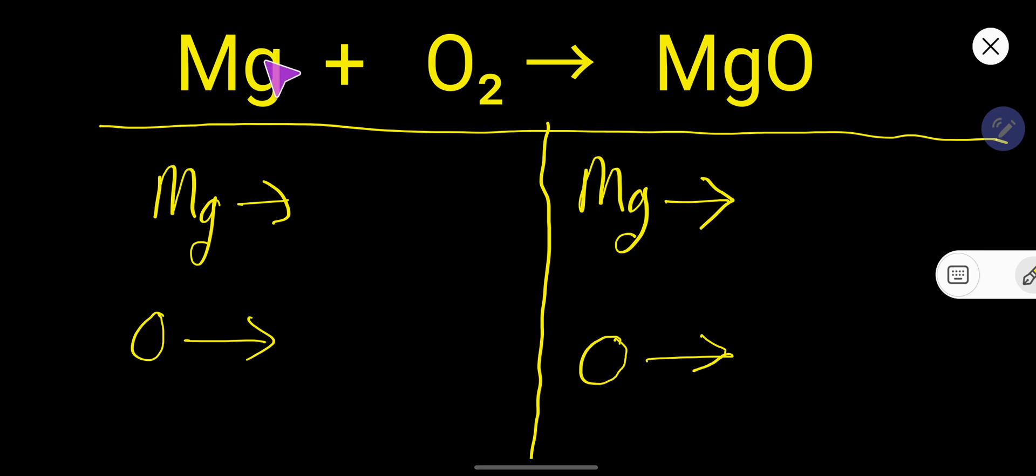On the left-hand side, the number of magnesium atoms is 1, the number of oxygen atoms is 2. On the right-hand side, the number of magnesium atoms is 1, the number of oxygen atoms is 1.